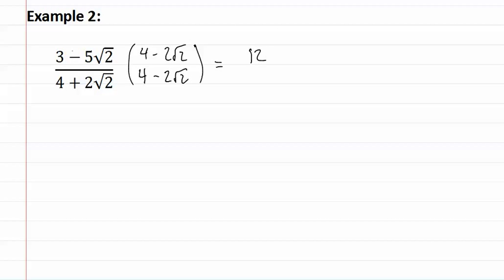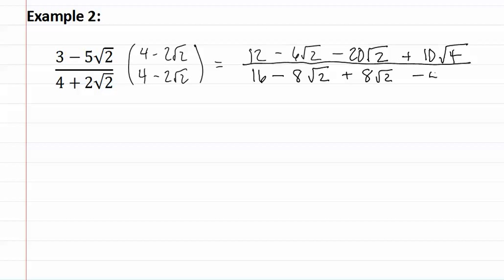Three times four is twelve, then we get minus twenty root two plus ten root four. Now, let's look at the denominator, which becomes sixteen minus eight root two plus eight root two minus four root four. Once again, the middle terms of the denominator are gone. Let's simplify each of these. We have twelve minus six and twenty gives us twenty-six root two, and the square root of four is two, and ten times two is twenty.